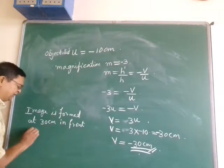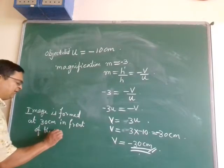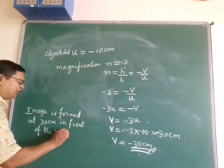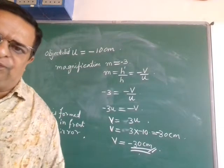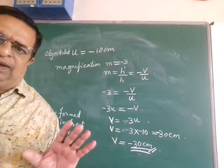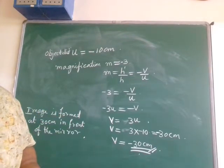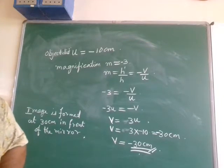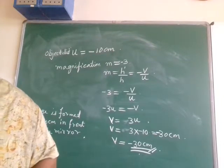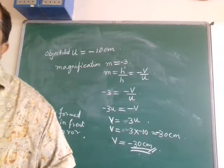Real images are formed in front of the mirror; virtual images are formed behind the mirror. This is the answer for the second in-text question on page number 171.